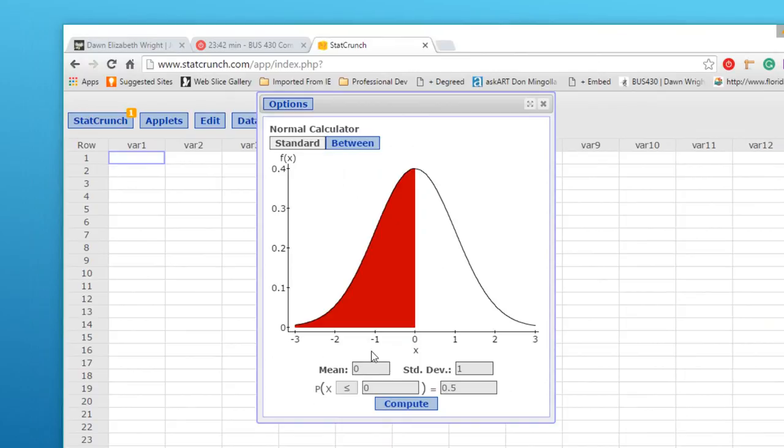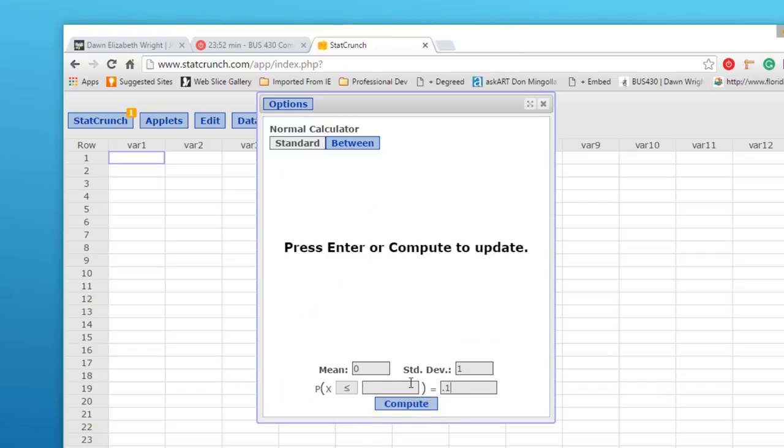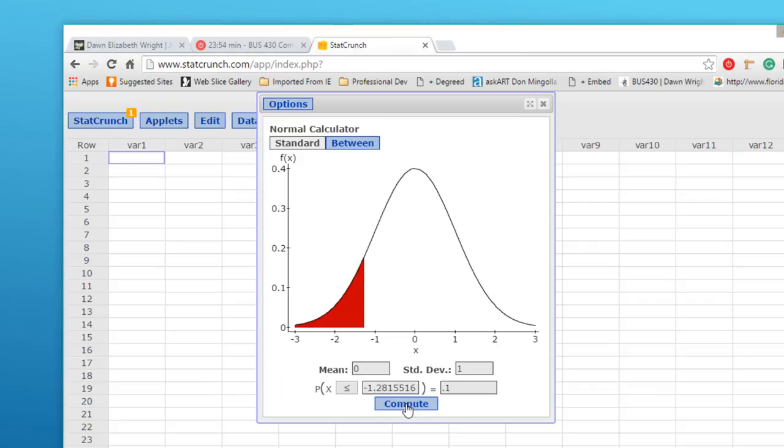Let's solve for the minus z, the lower side first. We leave our less than or equal pointing to the left, the lower side, and we have 10% of the area there. That means, just by clicking on Compute, the minus z is minus 1.282, rounding to three decimal places.